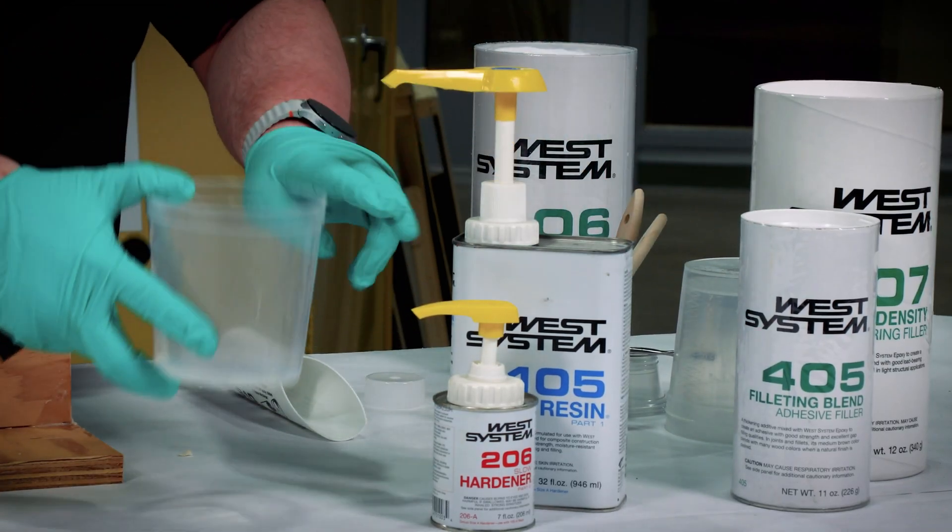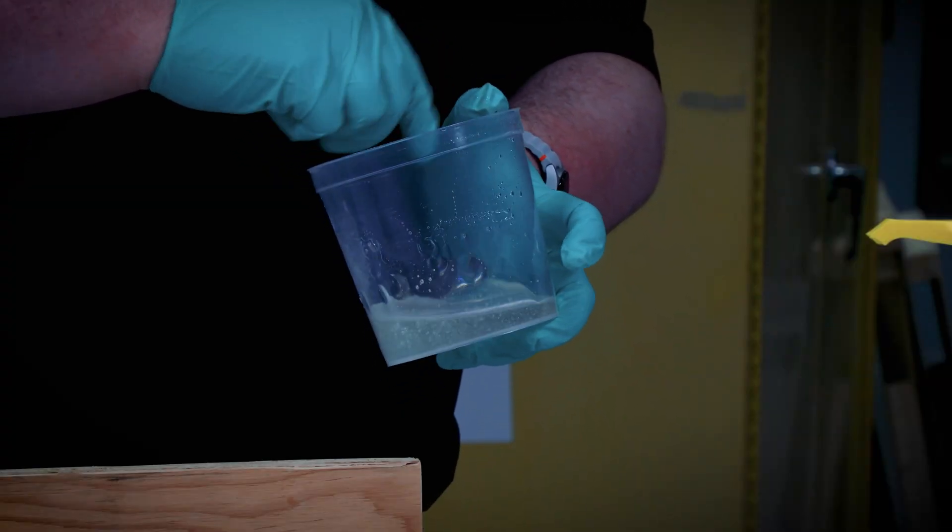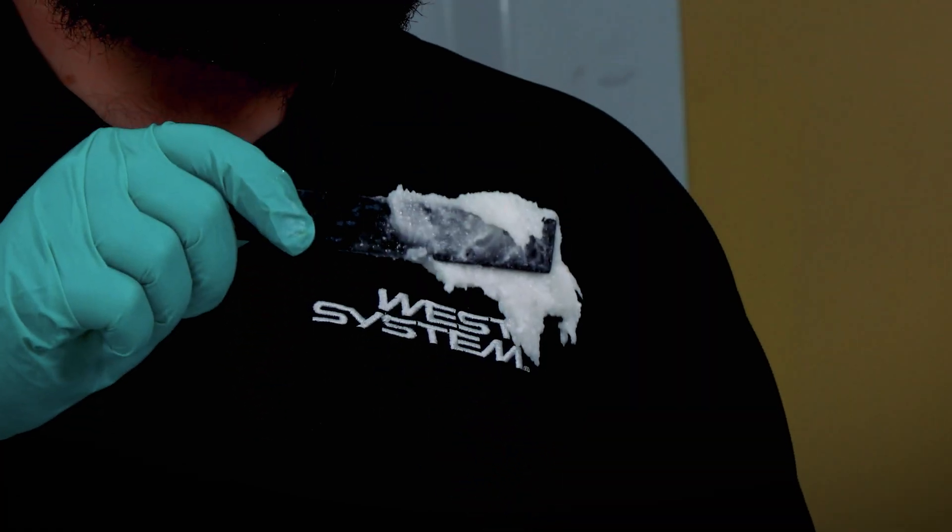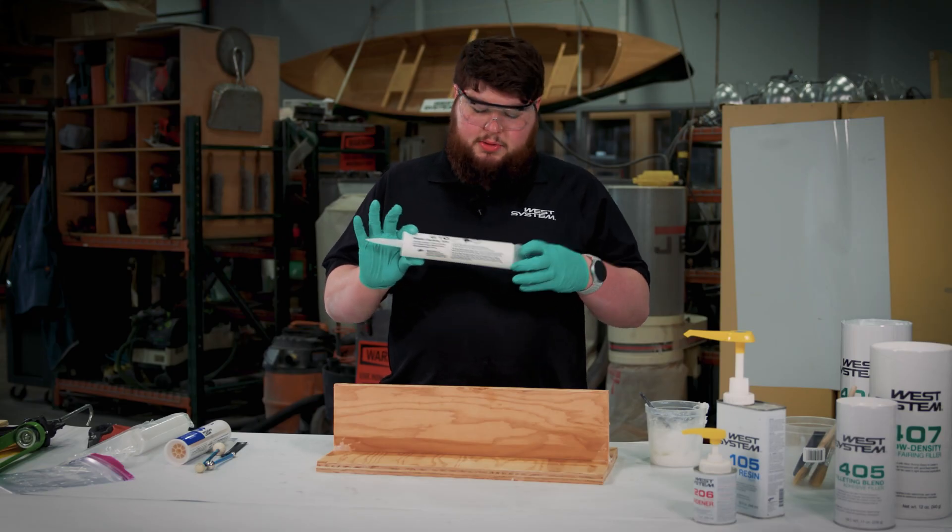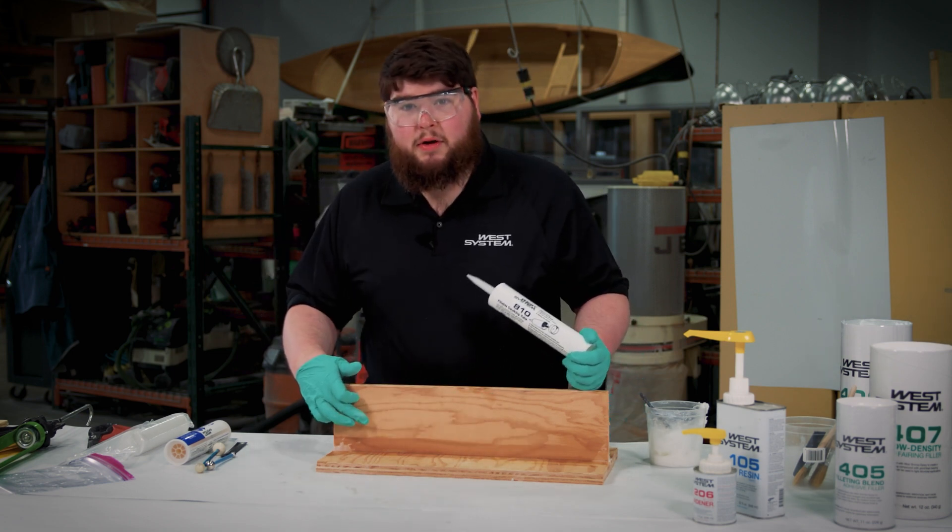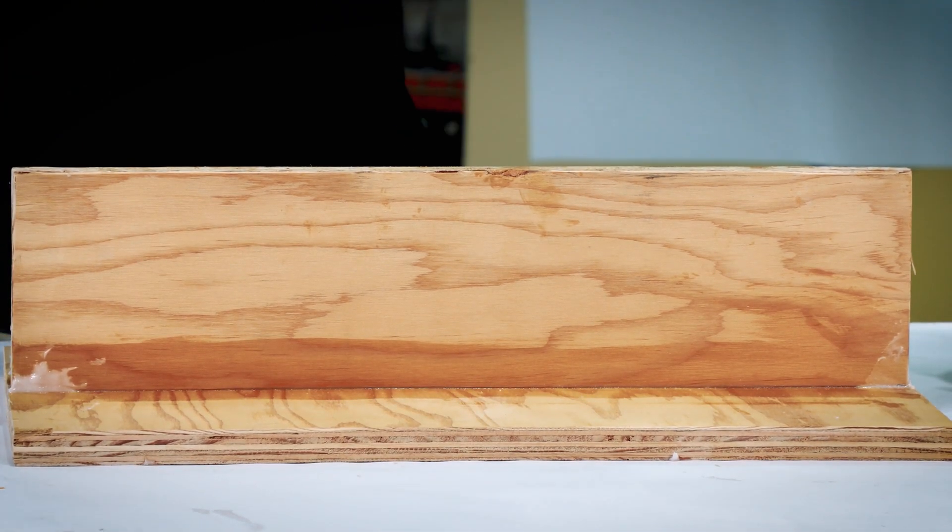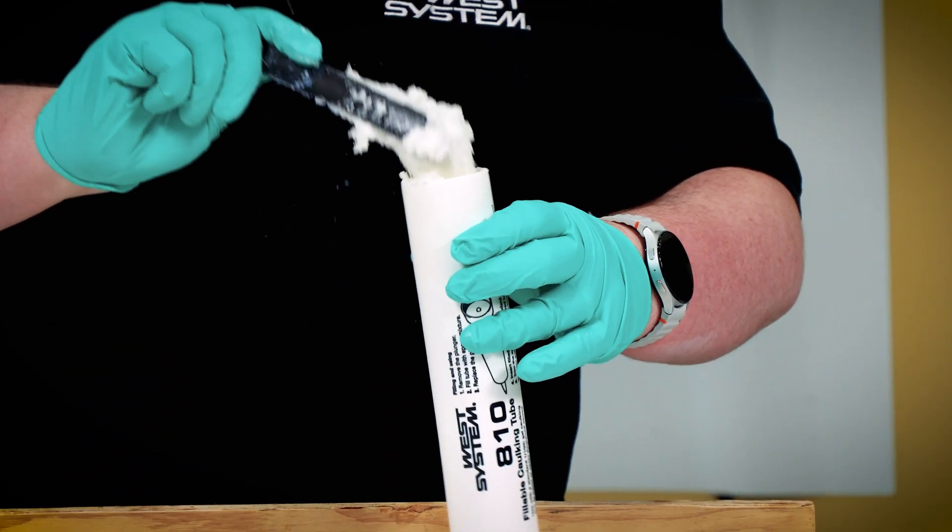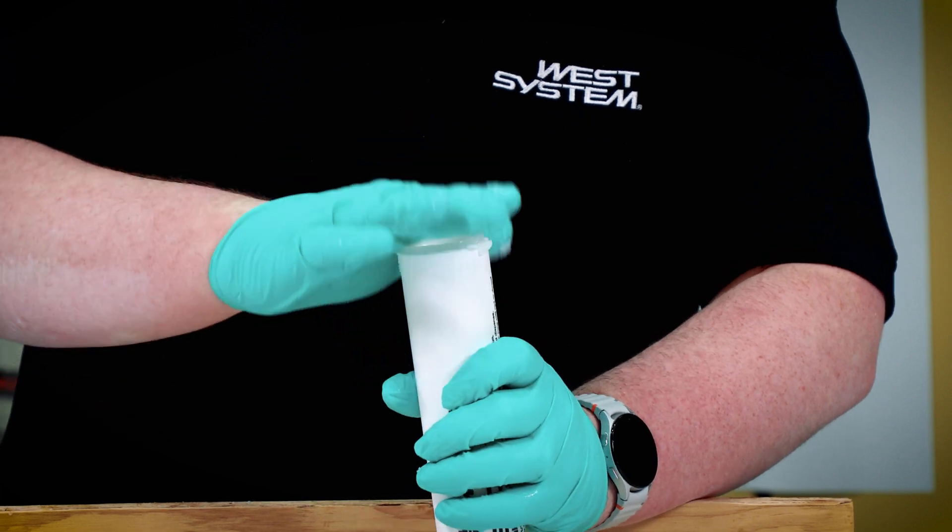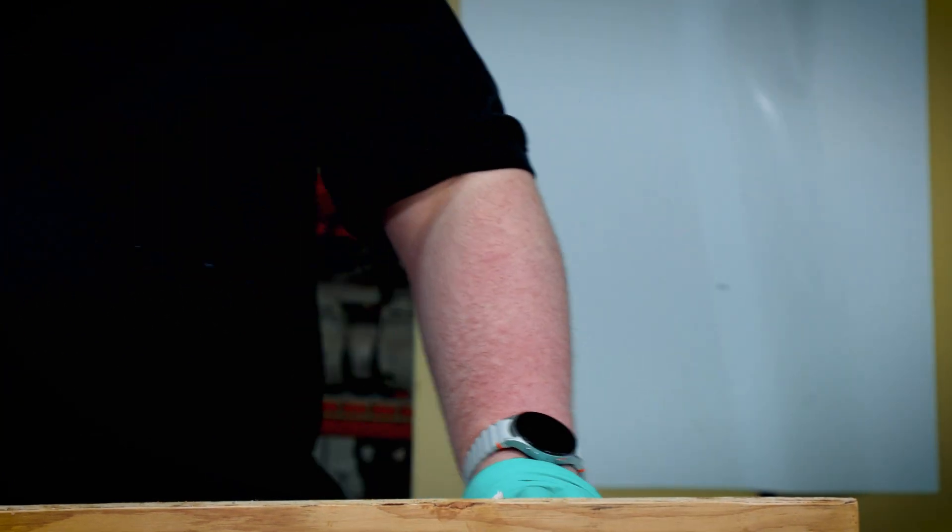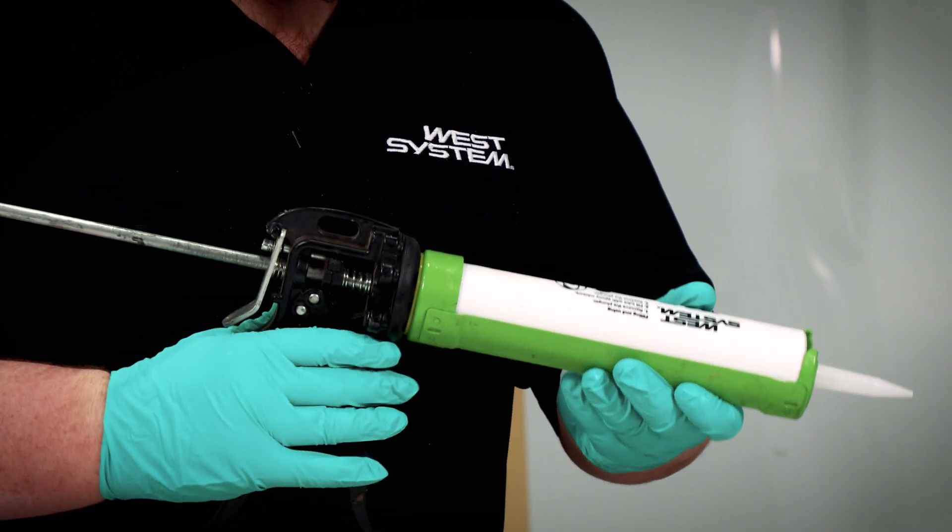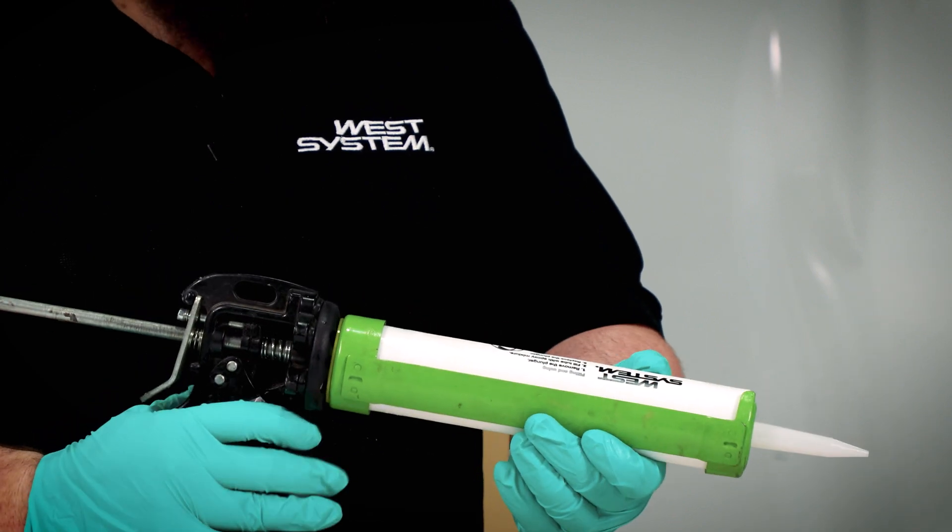So we have our 105 resin mixed with our 206 slow hardener, mixed back with some 406 colloidal silica to a nice thick consistency. We're going to use one of these 810 caulking tubes, the fillable caulking tubes, just to lay down a quick bead. As you can see, we've already wet out our surfaces and they're all ready to be filleted. There should be plenty for this fillet. Then we're going to use the cap that comes with it, slide it into the hole. It's a little tough because it's a tight fit. So we'll just pop this in our gun right here. I would recommend using a gun you don't care too much about because you will get epoxy on it.